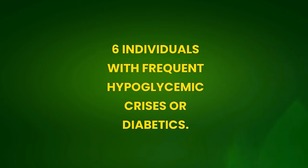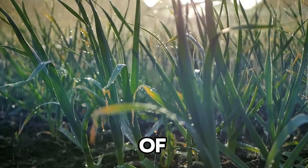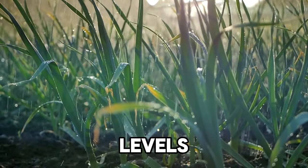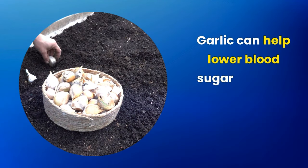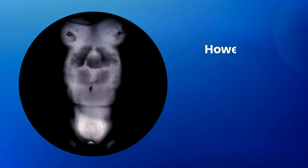6. Individuals with frequent hypoglycemic crises or diabetics. Another relevant consideration is the effect of garlic on blood glucose levels. Garlic can help lower blood sugar, which is beneficial in preventing diabetes.